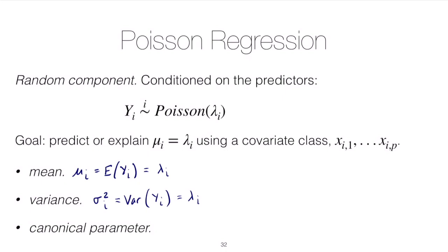We'll study what to do if we have overdispersion. Recall from our lesson on generalized linear models that an exponential family has a canonical parameter. In this case the canonical parameter θi equals the natural log of the mean, which is the natural log of the rate parameter λ. This will be useful in selecting the link function.